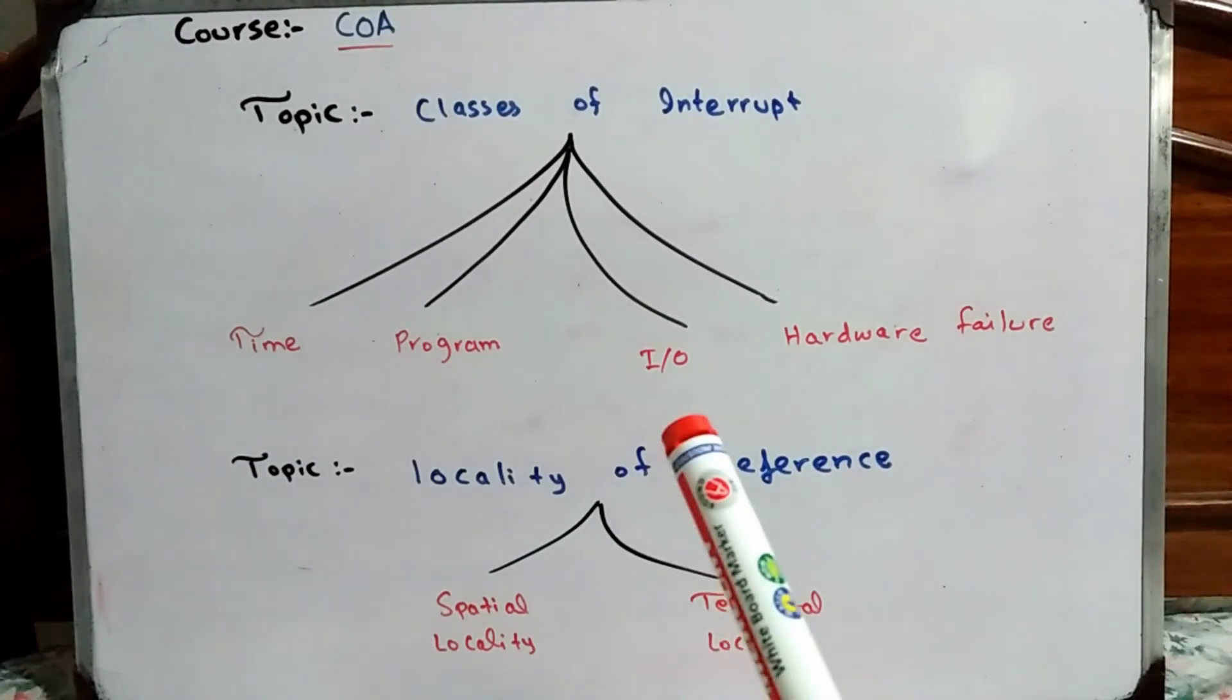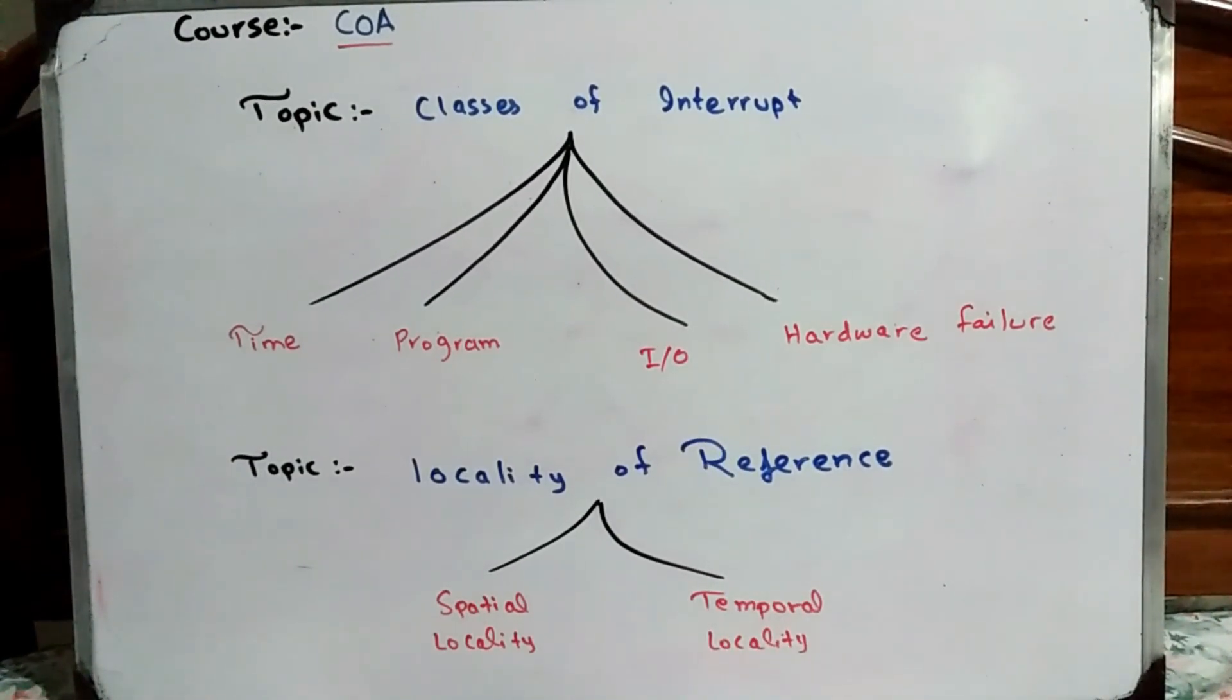The third type of interrupt is I/O interrupt. When the CPU is required to request a command or instruction, it is required to execute an I/O device, but the program or CPU is not assigned to the I/O device, the CPU has to wait. So we will say I/O interrupt.